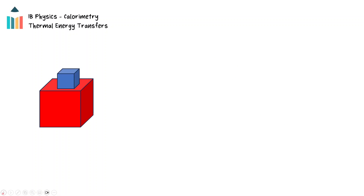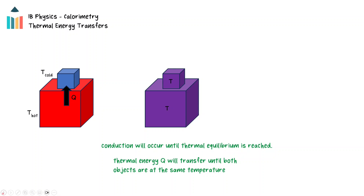When two objects with different temperatures are in contact with each other, thermal energy will transfer from the hot object to the cold object. Thermal energy will continue to transfer until both objects reach the same temperature, or thermal equilibrium. This may involve a change of phase for an object before the final equilibrium temperature is reached.